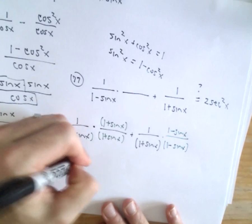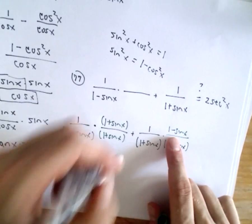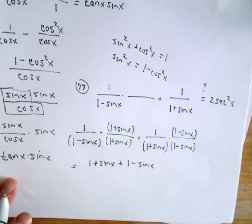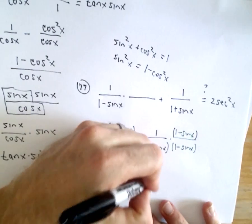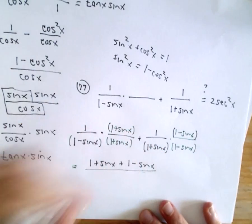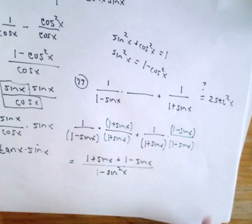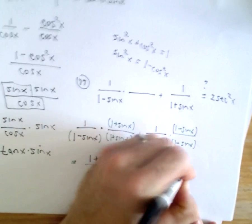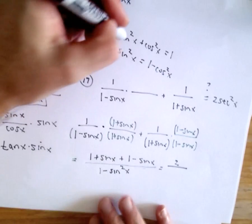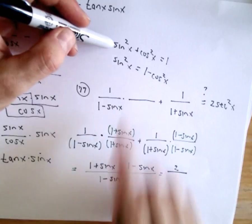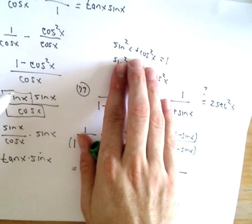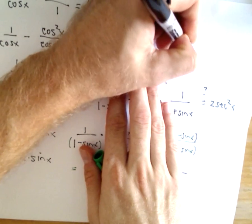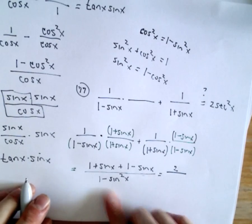Well in the numerator we'll have 1 + sin(x) plus 1 - sin(x). I usually like to put it in parentheses just to make it look a little cleaner. In the denominator we've got a difference of perfect squares. We'll be left with 1 - sin²(x). Okay, so in the numerator we've got 1 + 1 which is 2. The sin(x)'s will cancel out. And using the same identity, if we subtract sin² from both sides, we'll have cos²(x) equals 1 - sin²(x). So we can replace the denominator with cos²(x).